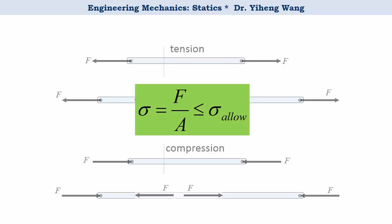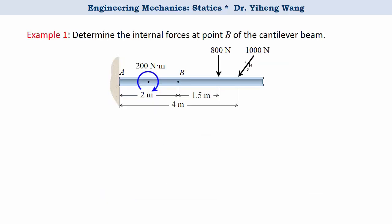Now let's look at a more general example. We have a cantilever beam with point A as a fixed support, and we're asked to find the internal forces at point B. Since we're solving for internal forces, we need to first expose those forces, make them external, then draw the free body diagram and apply rigid body equilibrium analysis. We're familiar with this approach from truss analysis. This method is called the method of sections.